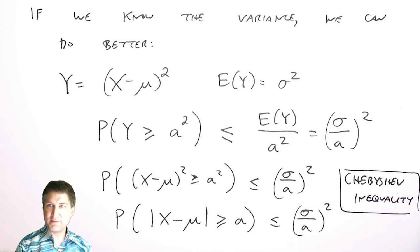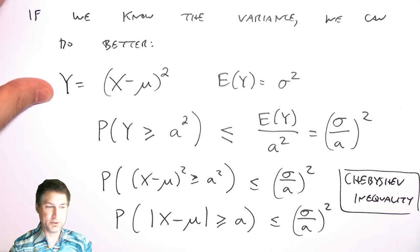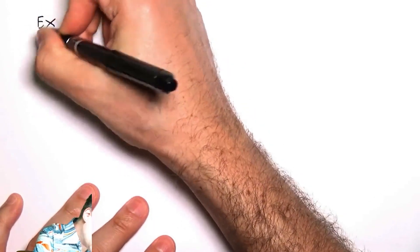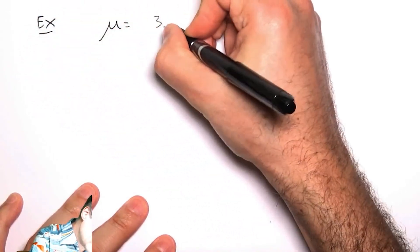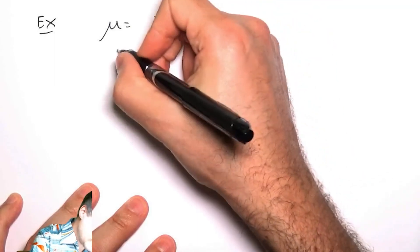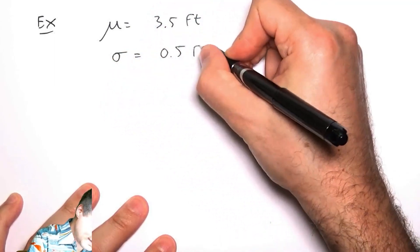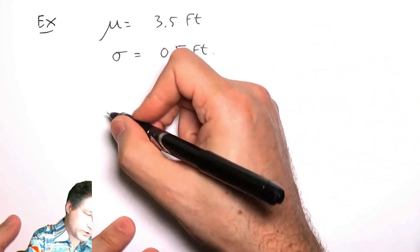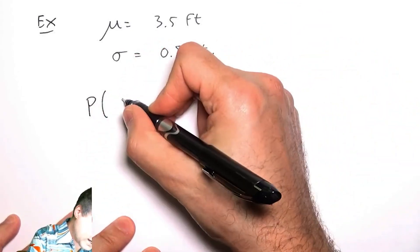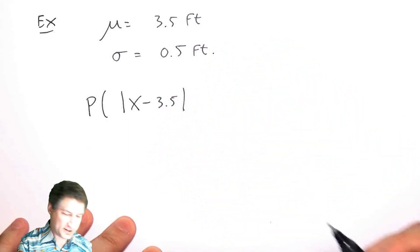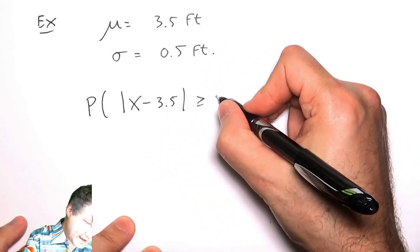Since now I have more information, the bound is tighter than the Markov inequality. Let's go back to my example with the kids in the kindergarten. Let's suppose that my average kid height is three and a half feet and my standard deviation of a kid is half a foot. What does Chebyshev tell me?